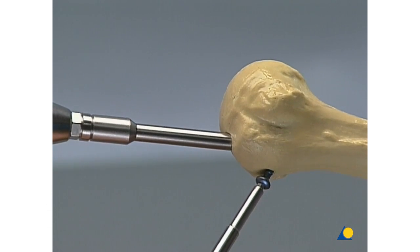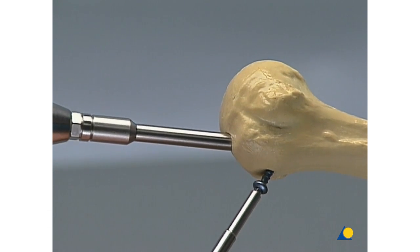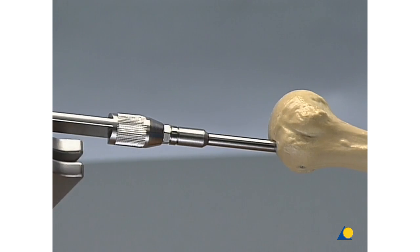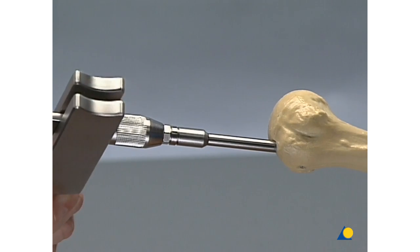First, remove the distal and proximal locking bolts. Then extract the nail using the slotted hammer.